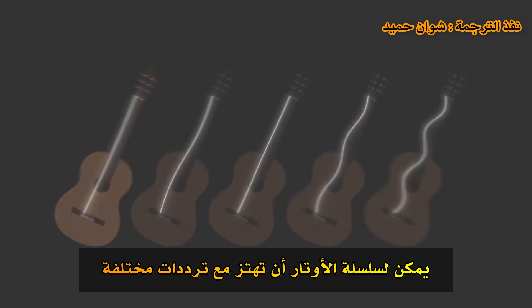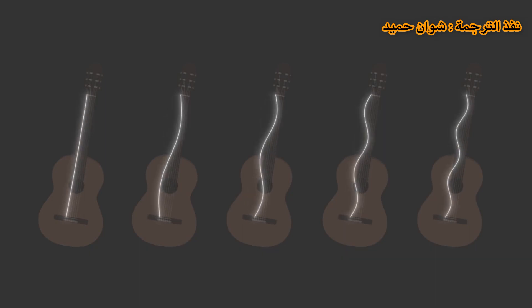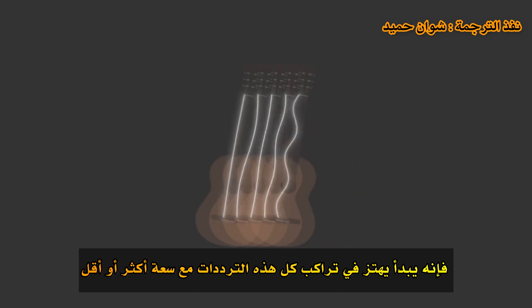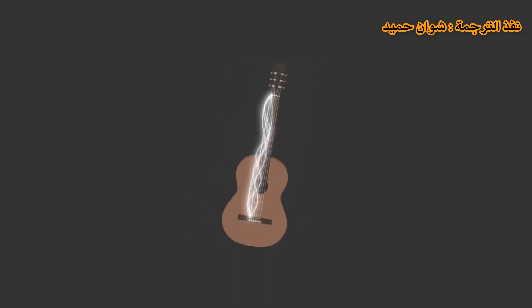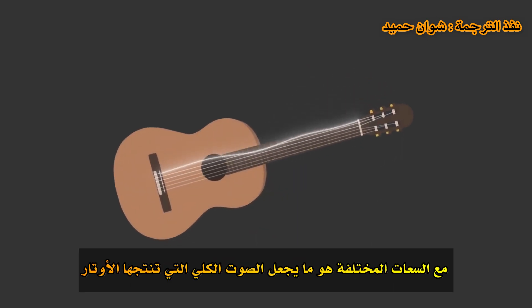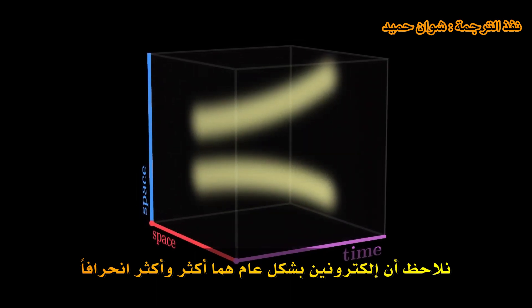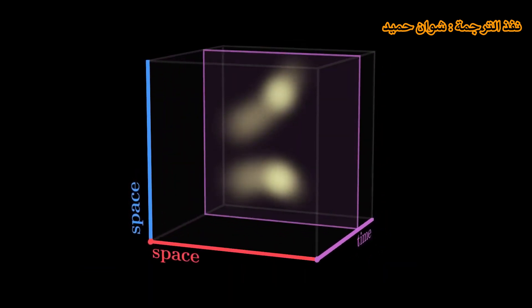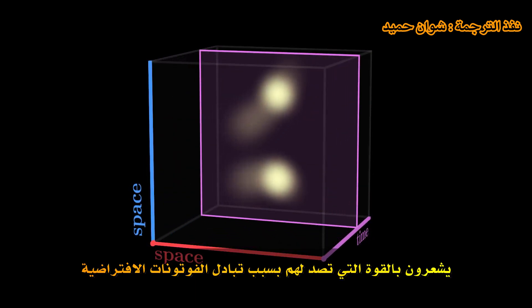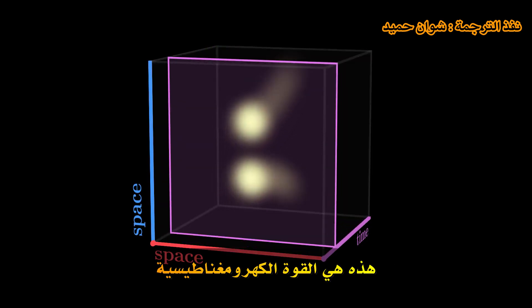Now consider the following analogy. On a guitar, a string can vibrate with different frequencies, each of which corresponds to a pure sound. But when we pluck the string, it starts to vibrate in a superposition of all these frequencies with more or less amplitude, and the synthesis of all these pure sounds together with different amplitudes is what makes the total sound produced by the string. Similarly, a quantum field evolves according to every possible scenario with more or less amplitude, and it is the synthesis of all these scenarios together that describes the real evolution of the physical system. When we add up all these possibilities, we observe that overall our two electrons are more and more deflected. They feel a force repelling them because of the exchanges of virtual photons. This is the electromagnetic force.